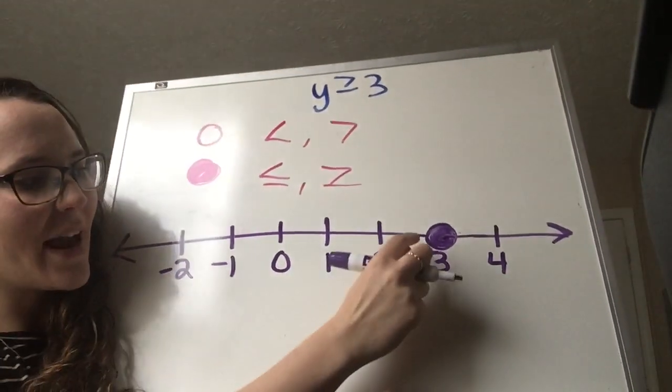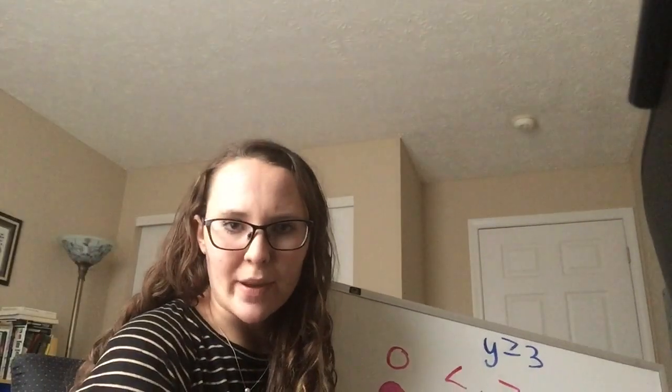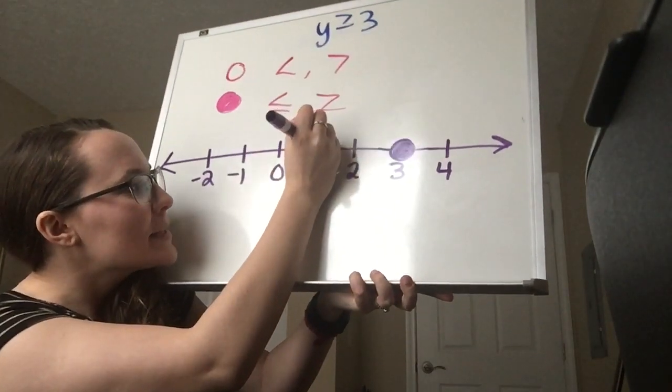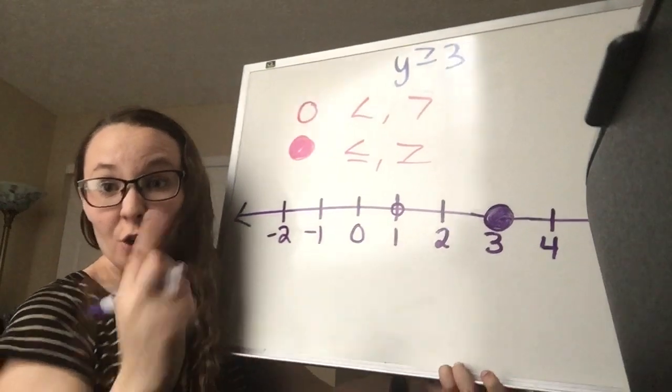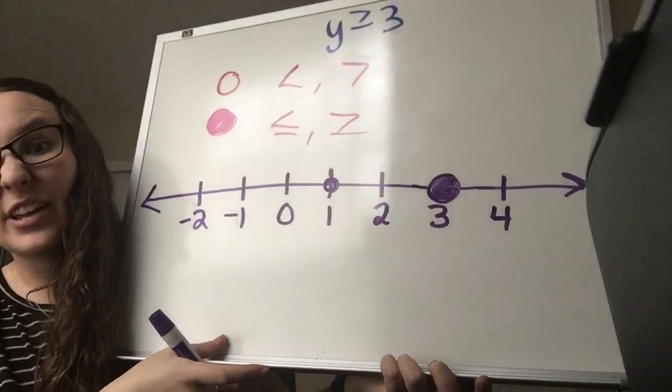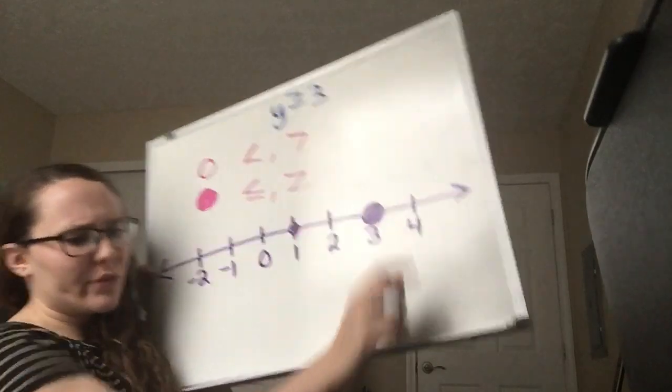Do you see how obnoxious that circle is? How big and clearly filled in it is? I have a story about a traumatic time in my math experience. I was taking a quiz on this, and I drew what I thought was an open circle, but my teacher marked it wrong and said it was closed — because my circle was teeny tiny. When teachers are grading fast, a small circle might look filled in. They don't get out a microscope to check. So if it's a closed circle, make sure it's super filled in. Don't expect to argue that it was open. Make it obvious.